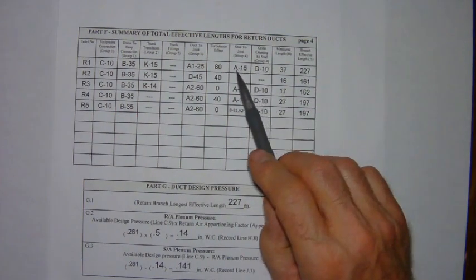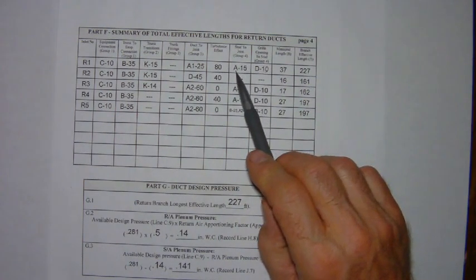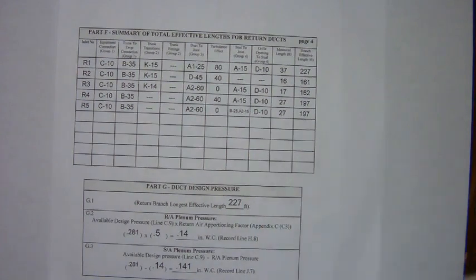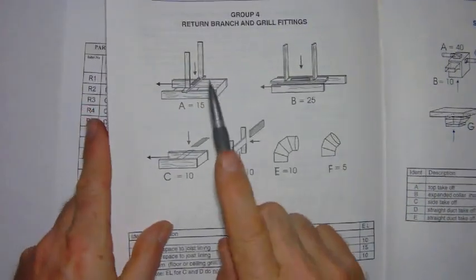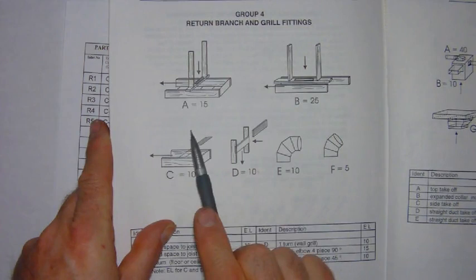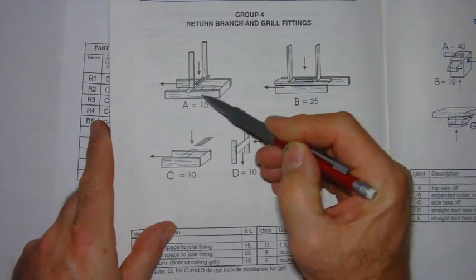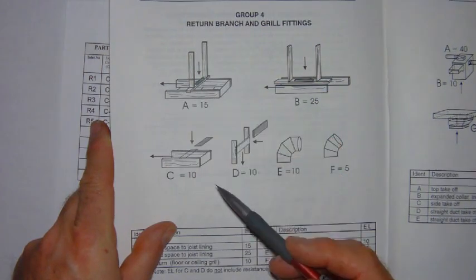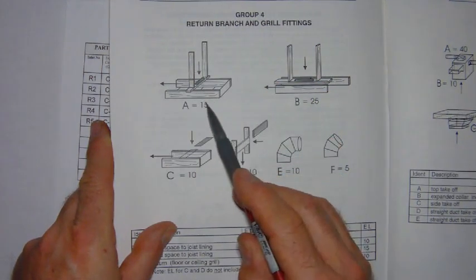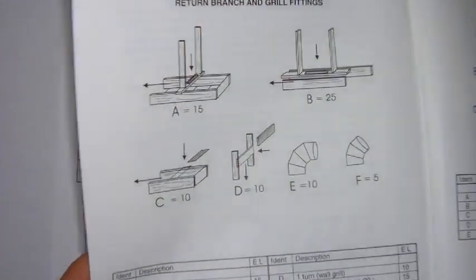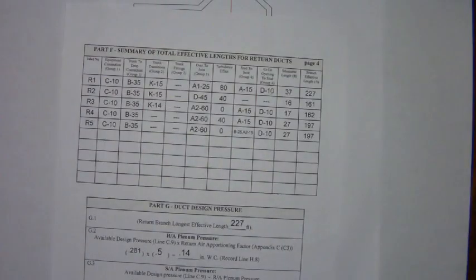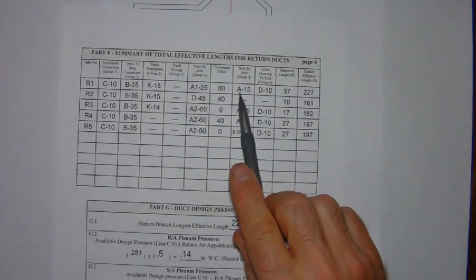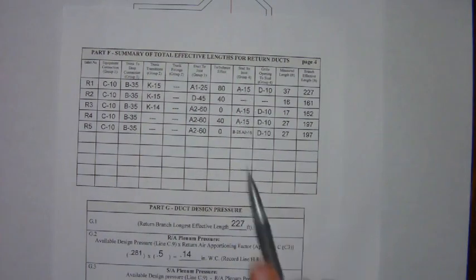And so we've got one A fitting. It's a type A fitting which corresponds to this one because our partition is perpendicular to the floor joist. The air is coming straight down, makes a nice easy turn. So we need to account for 15 feet of equivalent length. And so that's the A is the fitting identifier and 15 is the attributed equivalent length.